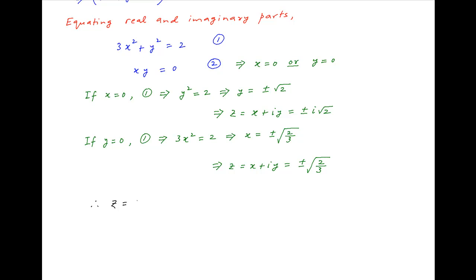Therefore, the possible values of z are plus or minus the square root of 2 over 3, and plus or minus i root 2. This is the required answer.